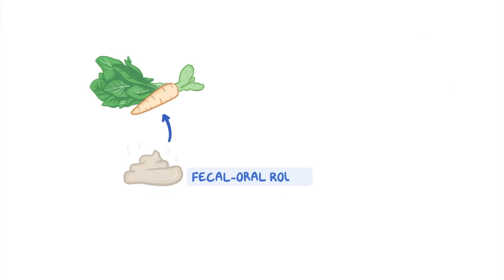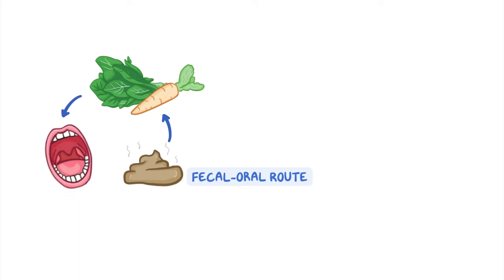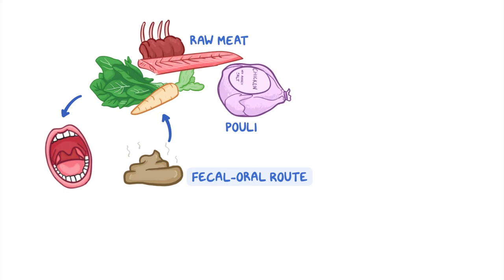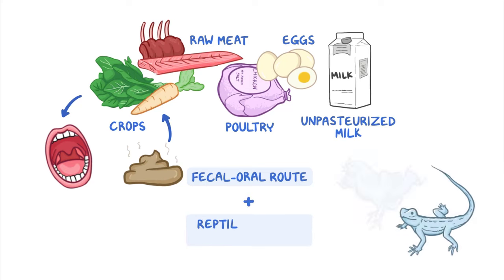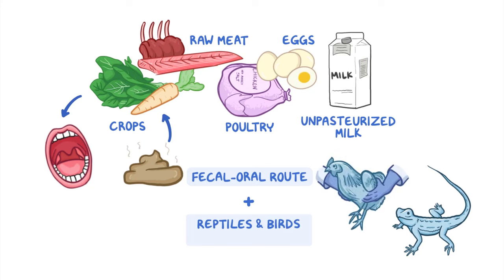Salmonella is typically transmitted through the fecal-oral route, after infected feces come into contact with various foods including raw meat, poultry, eggs, unpasteurized milk, and crops. Salmonella can also be present on the skin of reptiles and birds and be transmitted through contact with these animals.